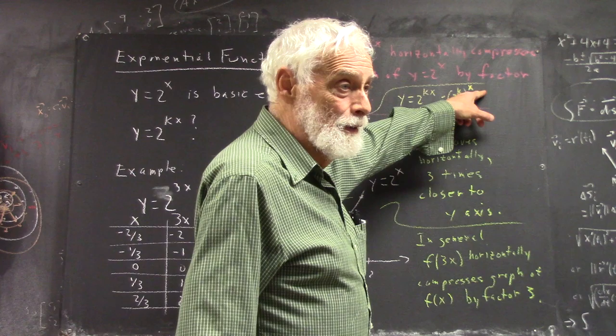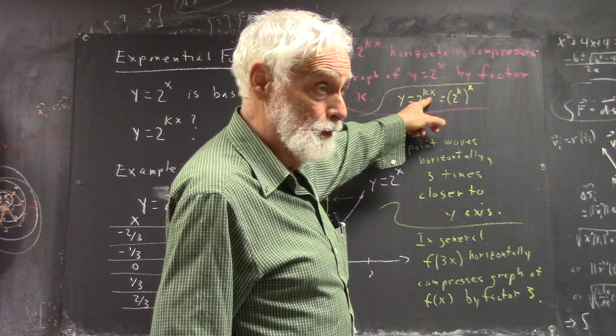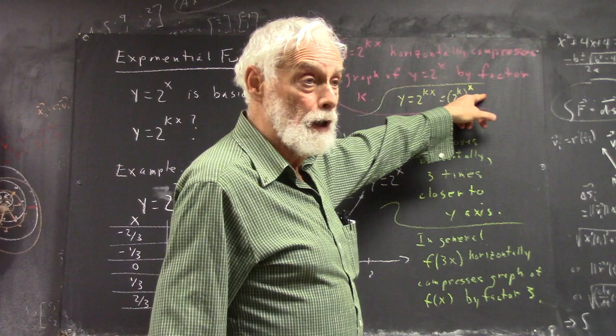If you have a power of 2 and take that to a power, you can multiply the exponents and write it like this. Well, if it's written like this, you can take it apart and write it like this.